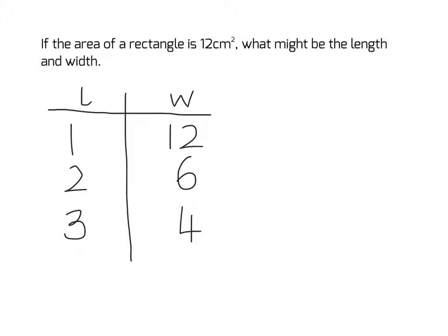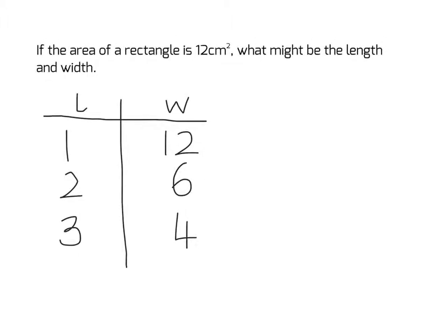And once we've found these factor pairs, what that means is that we know the possible length and width of the rectangle which has an area of 12cm squared. If the length is 1cm, then the width has to be 12cm. If the length is 2cm, then the width has to be 6cm. And if the length is 3cm, then the width must be 4cm.